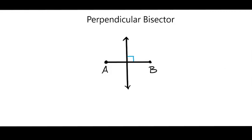Hey guys, today we're talking about perpendicular bisectors. A perpendicular bisector is a bisector, which is a line, ray, or line segment that cuts a line segment in half.